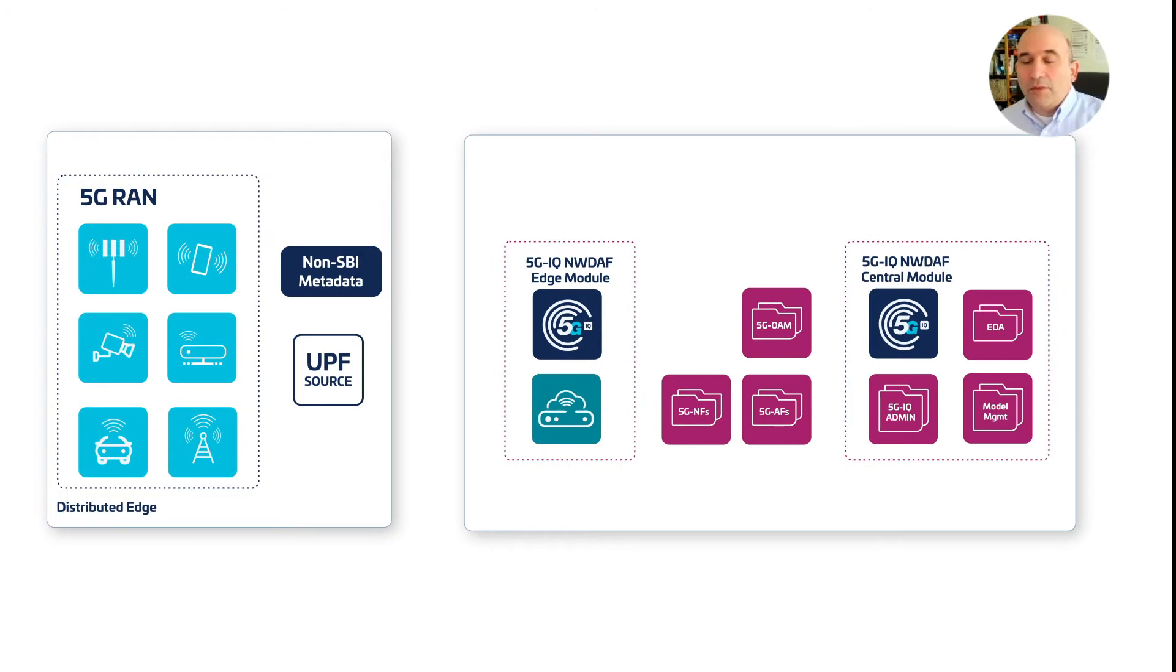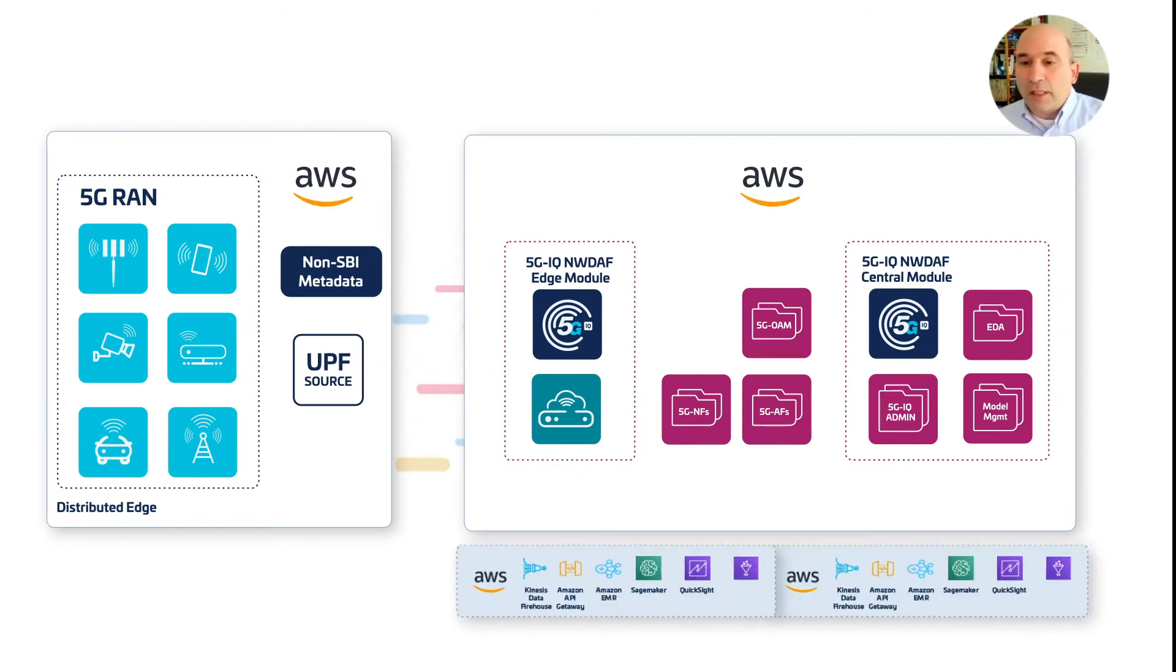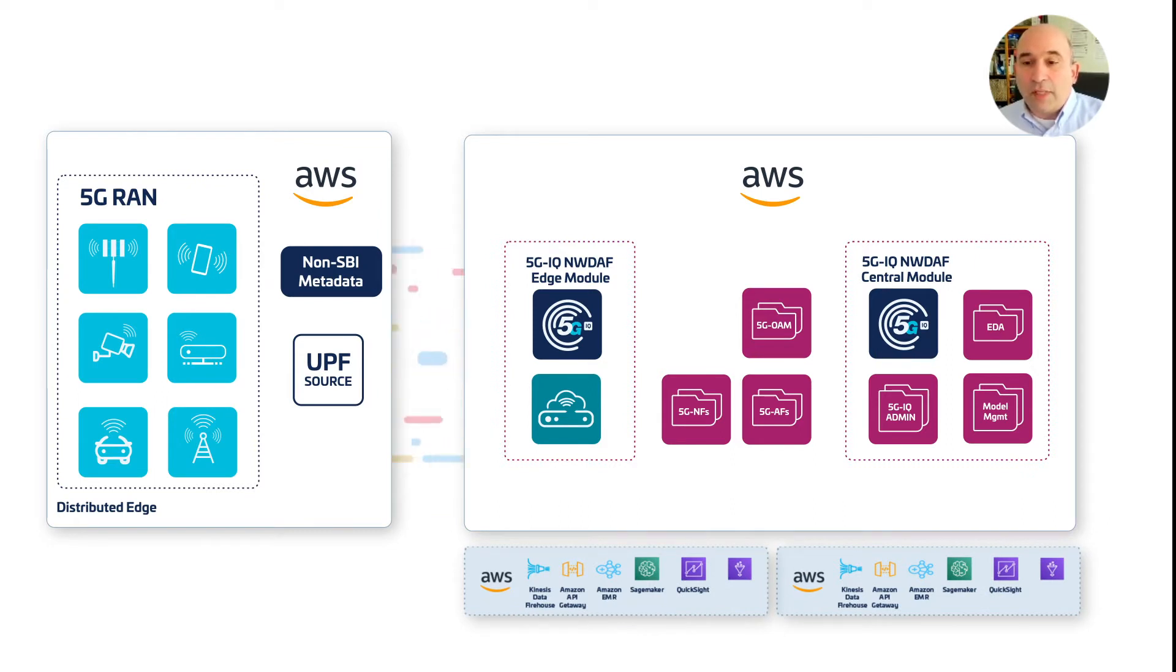The 5G IQ NWDAF is created to run natively in the AWS environment, leveraging AWS services. 5G IQ NWDAF is designed as a central module with one or more edge modules doing data collection, wrangling, and aggregation.